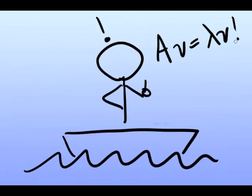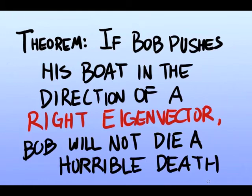Fortunately, Bob took ME564 and remembers his right eigenvectors. Theorem: If Bob pushes his boat in the direction of a right eigenvector, Bob will not die a horrible death.